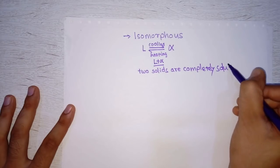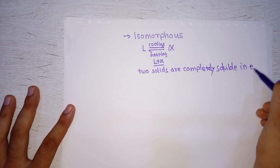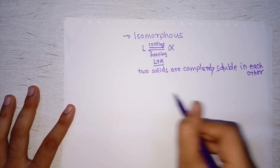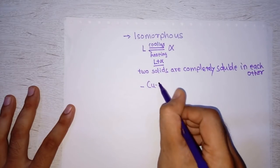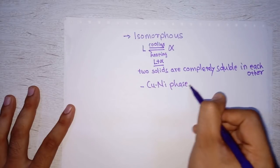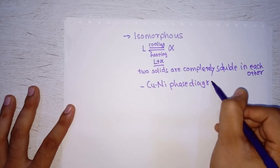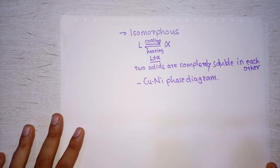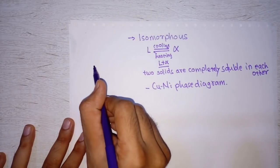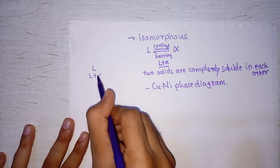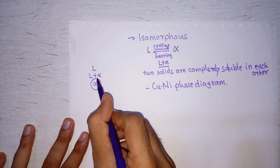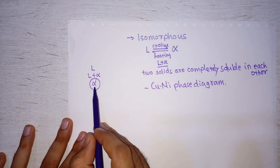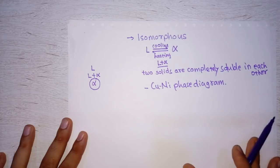An example of an isomorphous system is the copper-nickel phase diagram. In that diagram, we have three zones: liquid, liquid plus solid, and solid. We have only one type of solid, which means copper and nickel are completely soluble in each other. That is nothing but an isomorphous system.